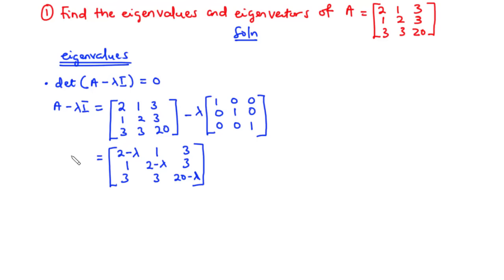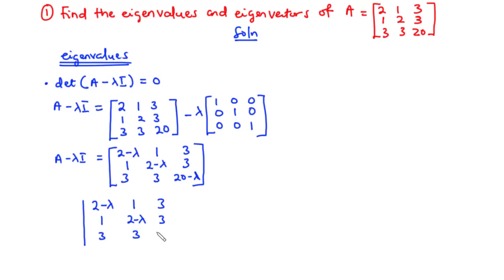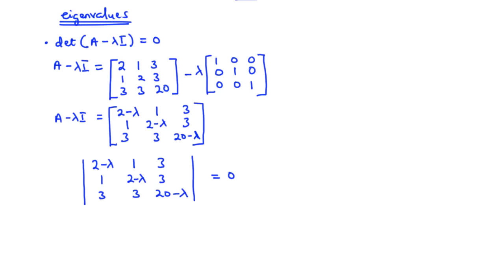So that is the matrix A minus lambda I, and we set its determinant equal to zero. We have the determinant of the matrix with elements 2−λ, 1, 3 in row 1; 1, 2−λ, 3 in row 2; and 3, 3, 20−λ in row 3, all equal to zero.